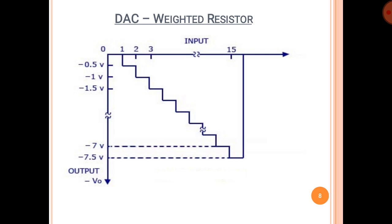We can draw the graph of input versus output as shown in the figure. When all inputs are 0, the output voltage is 0V. As we change the input from 0000 to 0001, we get −0.5V, and so on. This graph shows the input digital code versus output analog voltage for the weighted resistor DAC.